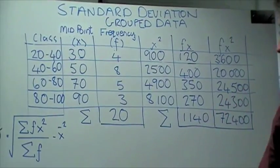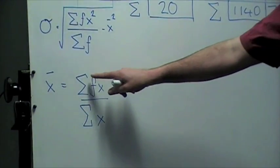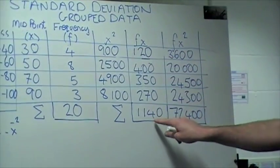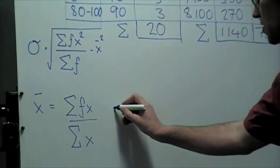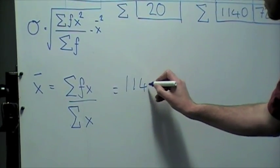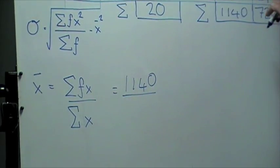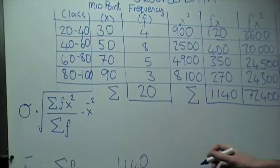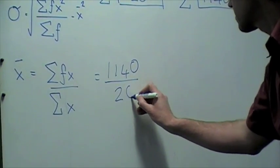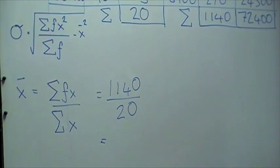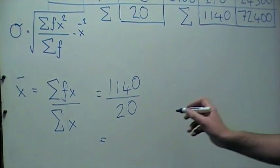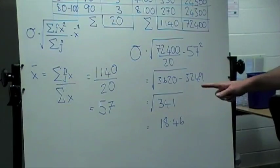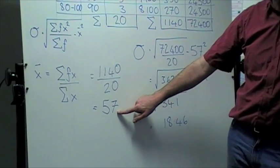X bar stands for the mean. And so we look at the sum of the frequency times the midpoint, which is this figure here. So that gives us 1140, divided by the sum of the frequency, which is 20. This gives us a mean of 57. So we've calculated the mean to be 57.